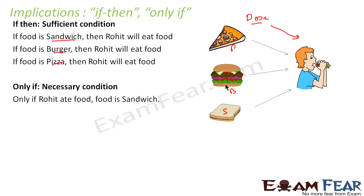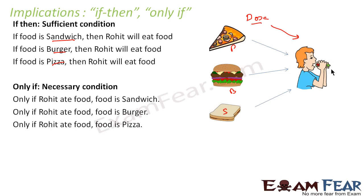So Rohit eating the food is a necessary condition to determine whether the food is pizza, burger, or dosa. Only if Rohit ate food, food is burger — so if you want to find whether the food is burger or not, Rohit eating the food is a necessary condition. If Rohit eats the food, that means food is burger; if not, it is not burger. Only if Rohit eats food, food is pizza. So here, 'only if' is a necessary condition.